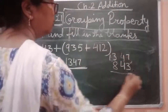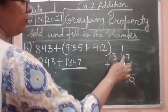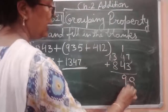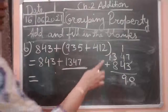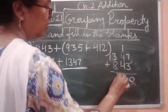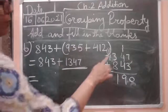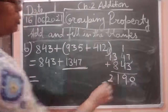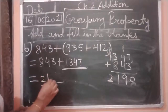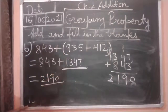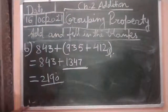Now: seven plus three is ten, carry one; four plus four is eight, plus one is nine; three plus three is six — wait, let me recount. Eight plus three is eleven, carry one; and one plus one is two. So we are getting 2,190.